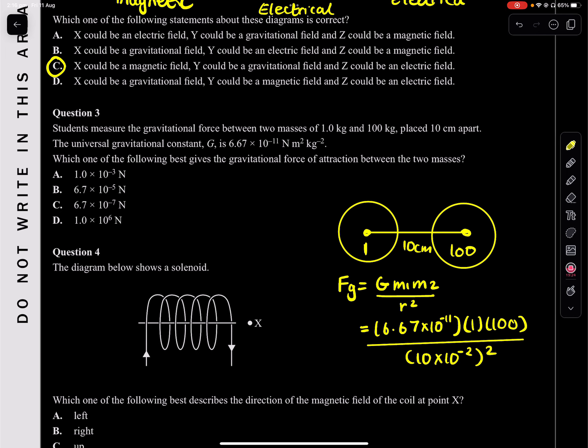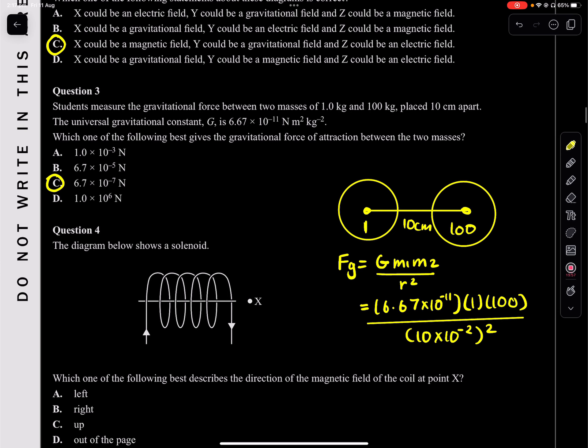Doing this in your calculator gives us 6.67 times 10 to the negative 7. So C is your answer: 6.67 × 10⁻⁷.